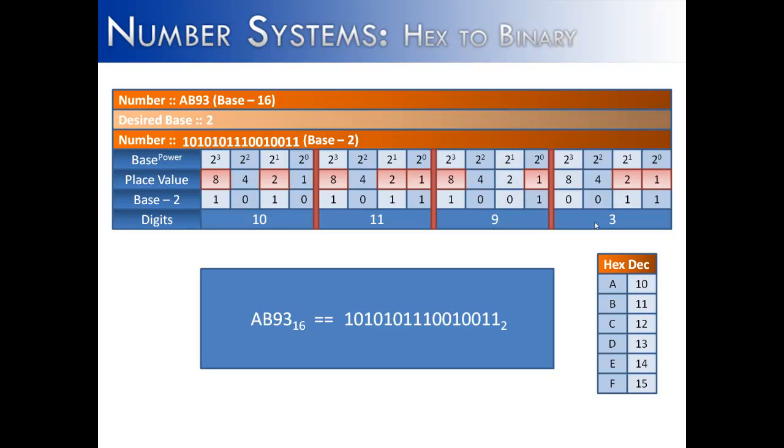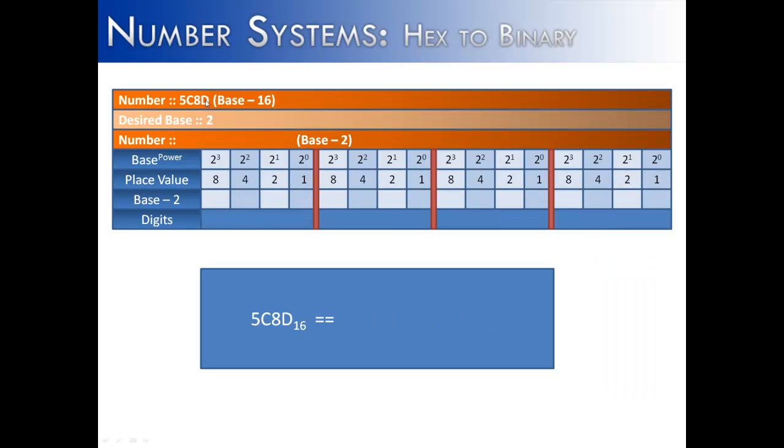And so we have 16 digits that are going to represent A, B, 9, 3 into base 2. Let's try that one more time.